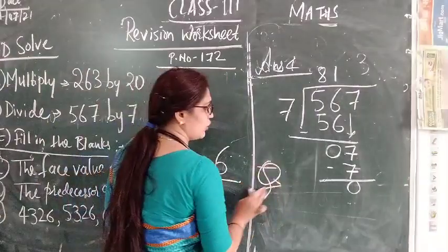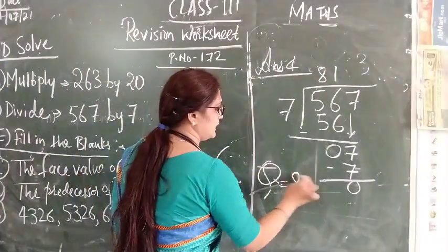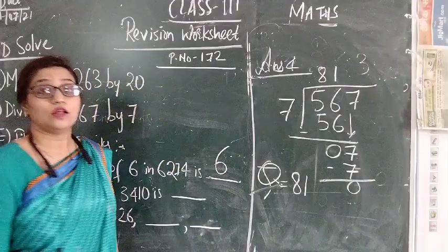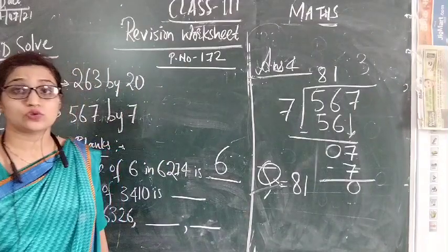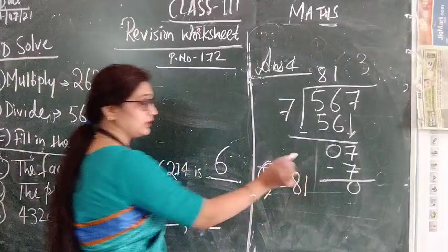7 minus 7 is 0. The quotient that we got is 81. Here no remainder is left. So our answer is 81.